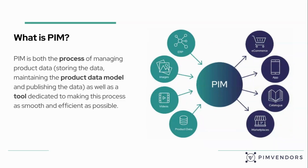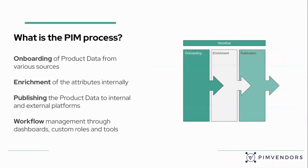You take information from different input sources. You enrich those in your PIM — your product information management tool — and then you publish those to your internal and external channels. The PIM process consists of four steps or four units. You have the onboarding from both internal and external sources. Product data comes from data pools, from your suppliers, from your ERP. You enrich those products with additional attributes. You add attributes, you add images, you add 3D models, explainer videos.